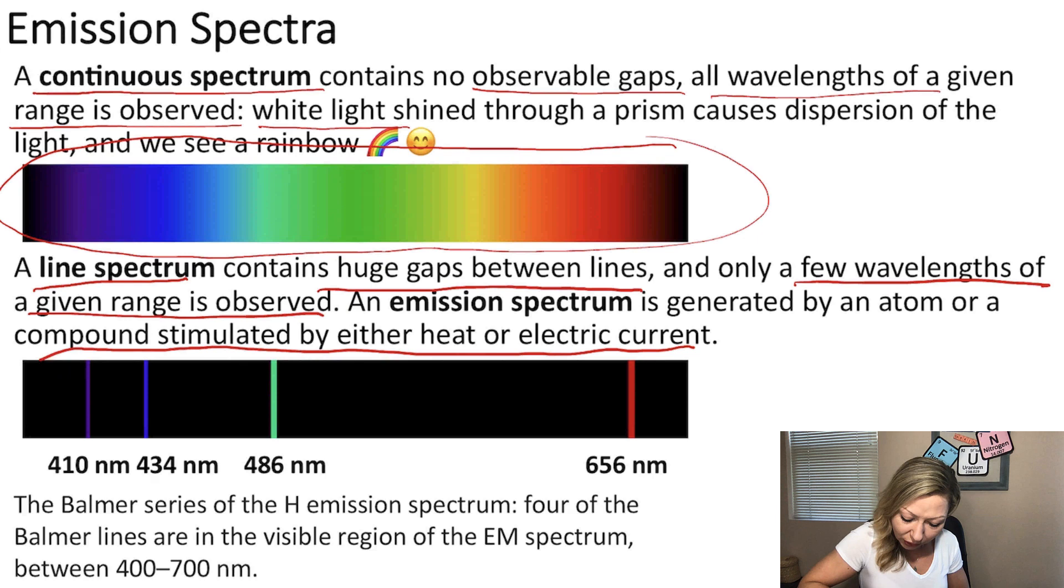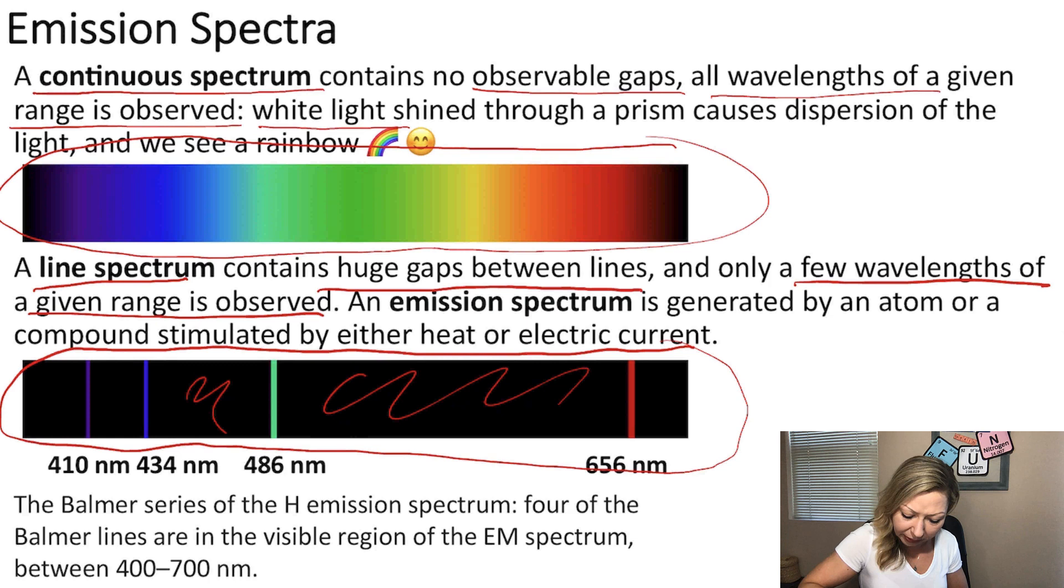You can see that most part of the spectrum is actually completely black. So there are huge gaps between the lines that are visible in this spectrum.